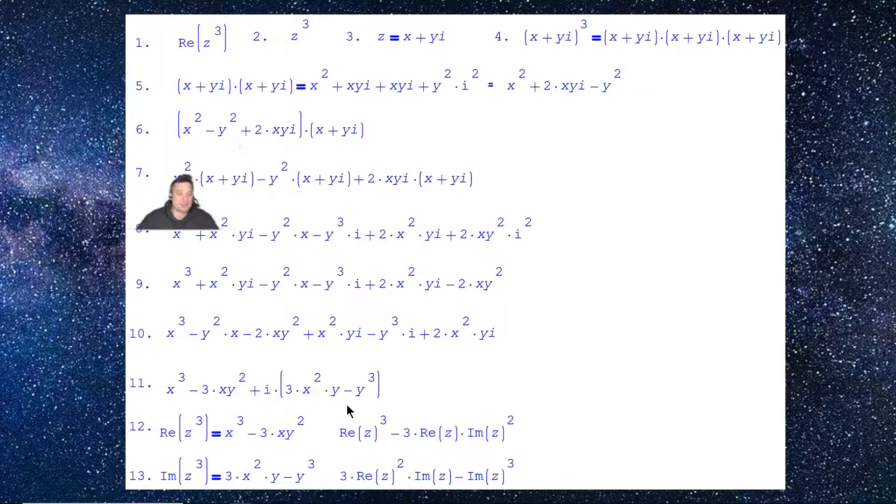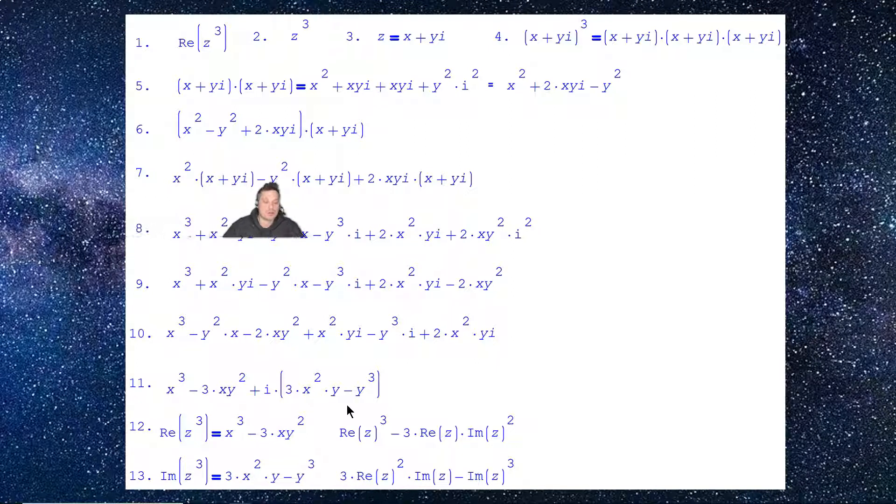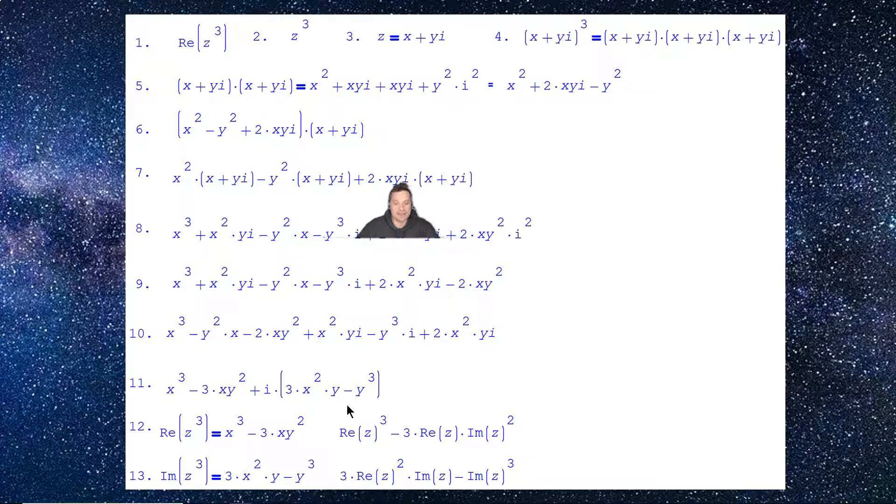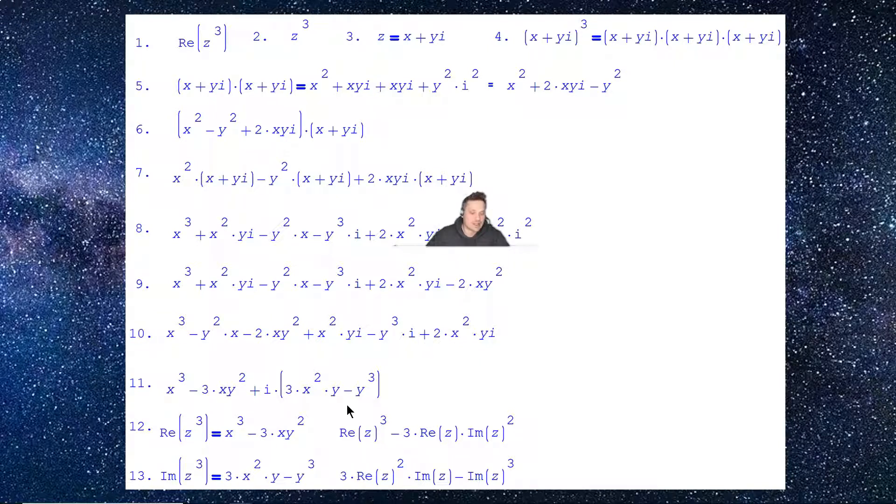So when I do that, it will look like this: x squared times x plus yi minus y squared times x plus yi plus 2xy times x plus yi. This is why I pre-typed it. So after that, let's continue. I'm going to have to do the distributive property again. So from 7 to 8 is the distributive property one more time. A lot of distributive property here. So I have x squared going over to x, that's going to give me x cubed.